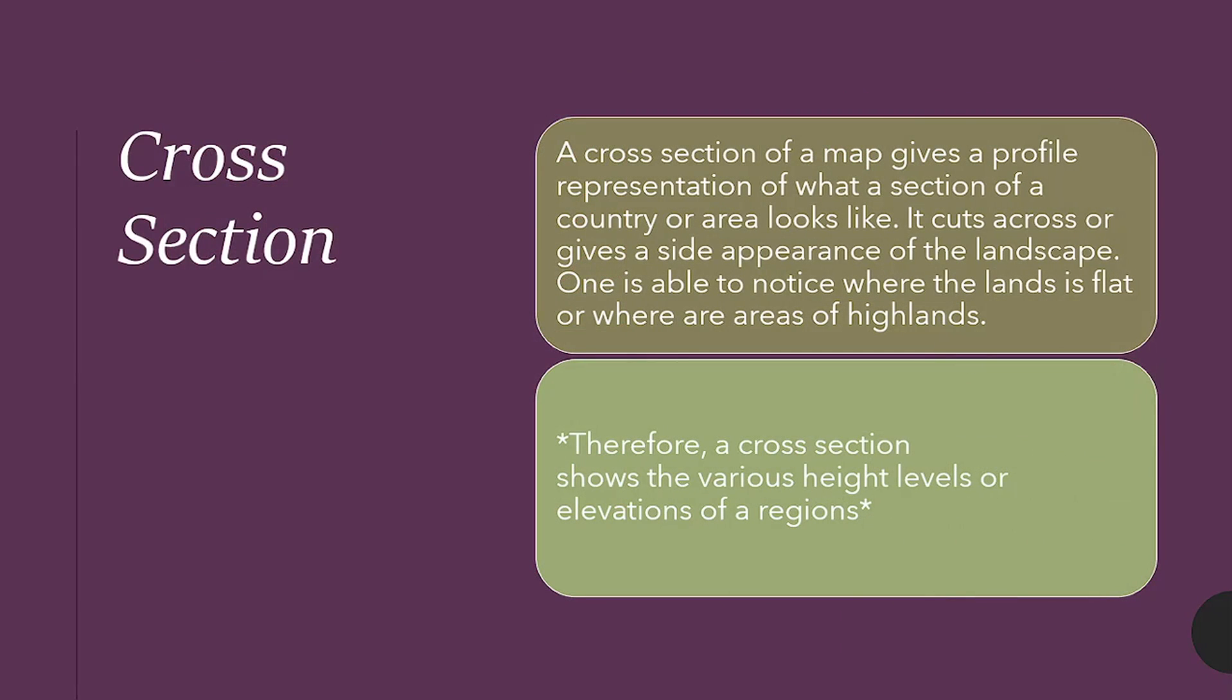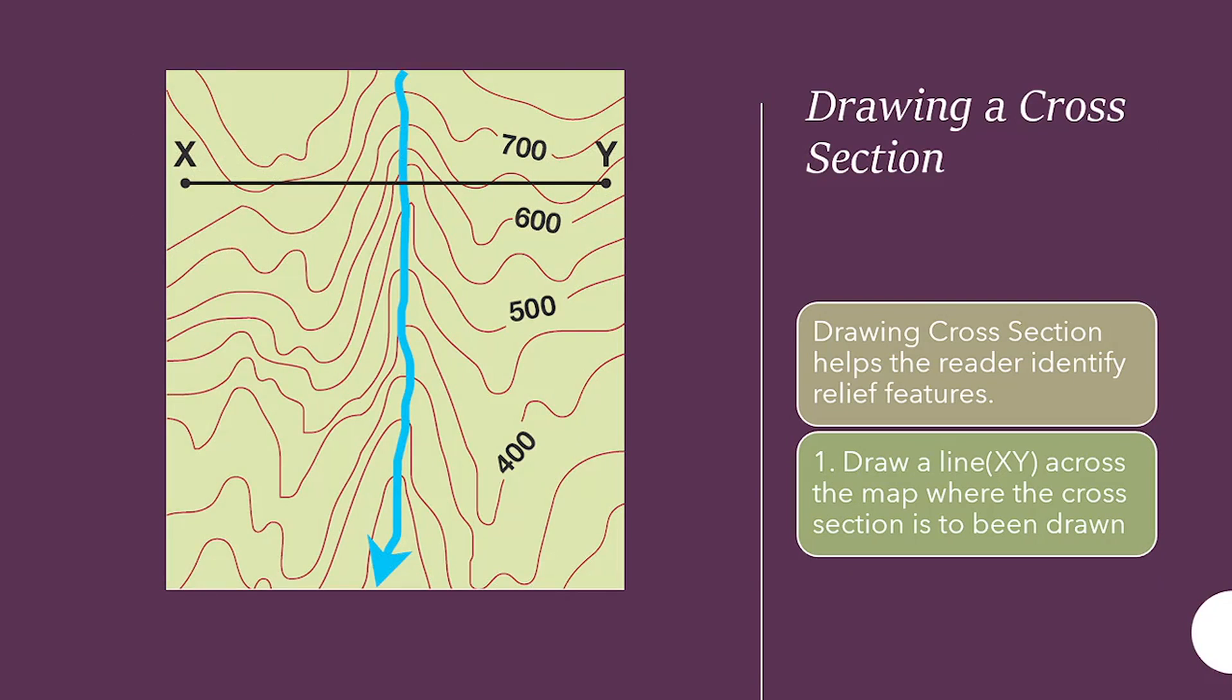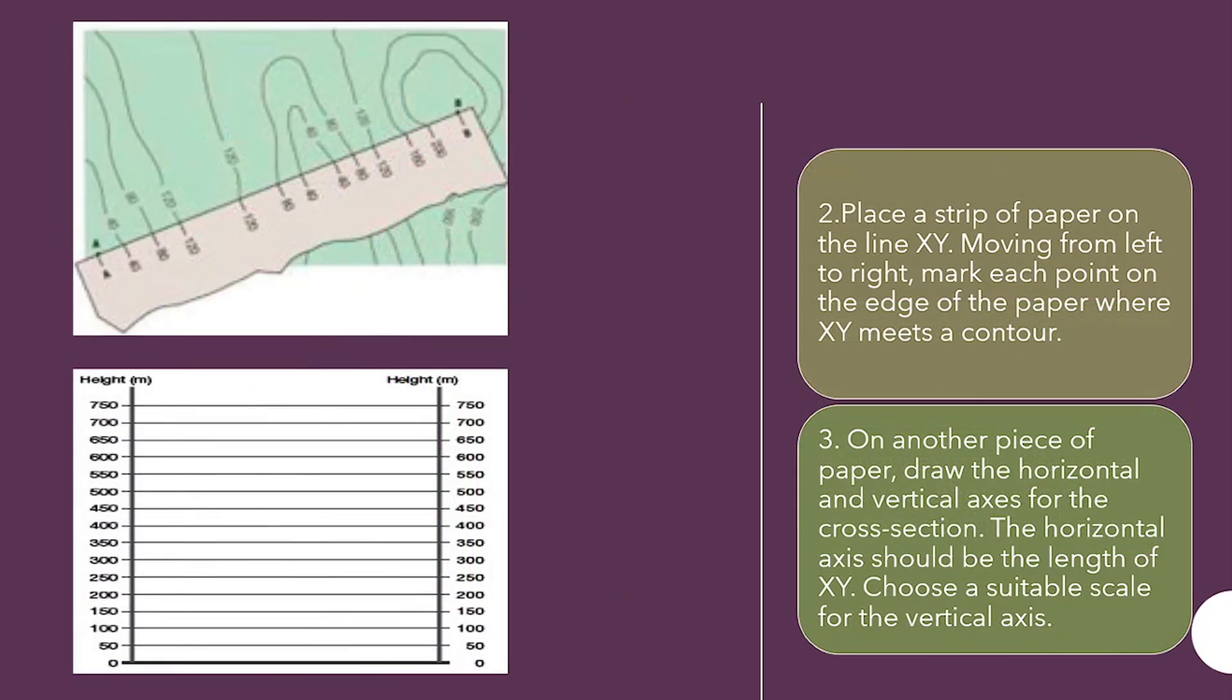Step 1. Draw a line X, Y cross the map where the cross-section is to be drawn. Step 2. Place a strip of paper on line X, Y. Moving from left to right, mark each point on the edge of the paper where X, Y meets a contour. As you can see, each point your paper touches a contour or meets a contour, you're going to mark that along the X, Y path.